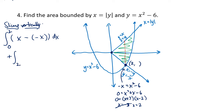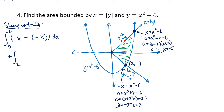The second part of the area goes from x equals 2 to wherever the region ends. Setting y equals x equal to y equals x squared minus 6 gives x squared minus x minus 6 equals 0, factoring as (x minus 3)(x plus 2) equals 0. Since we need a positive x value, this point is at x equals 3. The second integral from 2 to 3 has the top half of the absolute value on top and the parabola on the bottom. Adding both integrals gives a total area of 37 over 6.